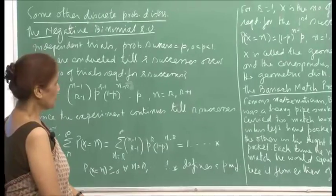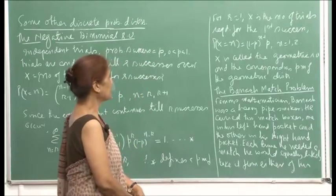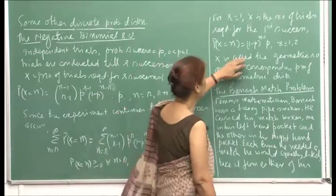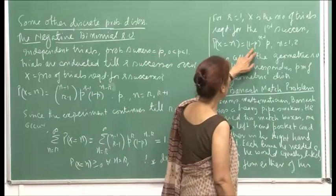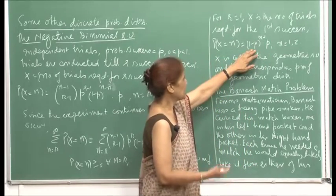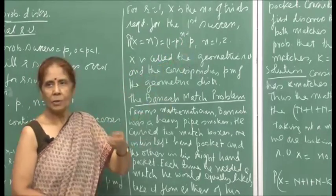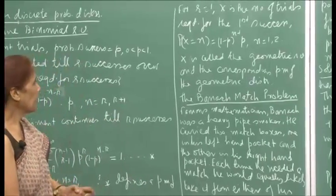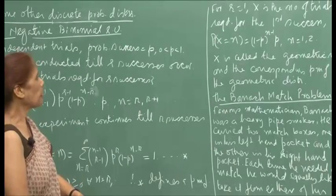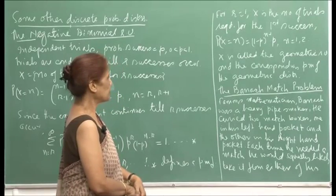When r is equal to 1, that means if you are just looking for the first success, then x is the number of trials required for the first success. You put r equal to 1, and the formula becomes (1 minus p) to the n minus 1 times p. That means the first n minus 1 trials must end up in failure, and the moment you hit a success, you stop. X is now called the geometric random variable and the corresponding PMF is the geometric distribution.